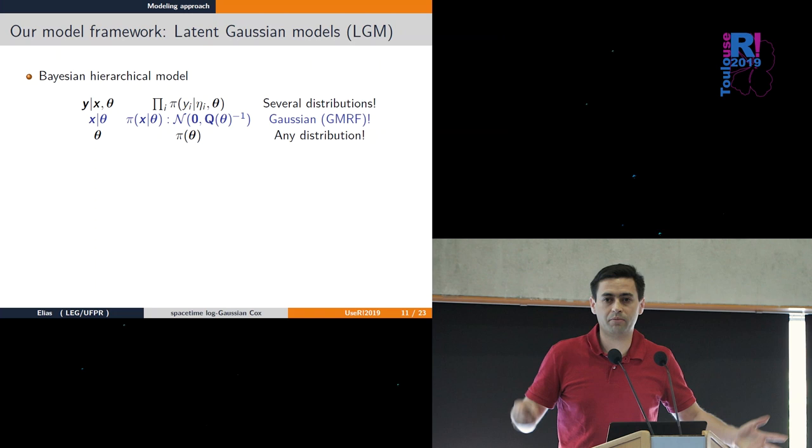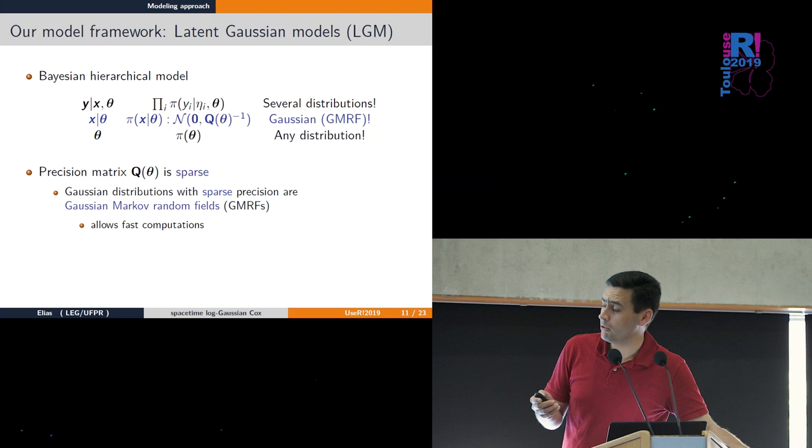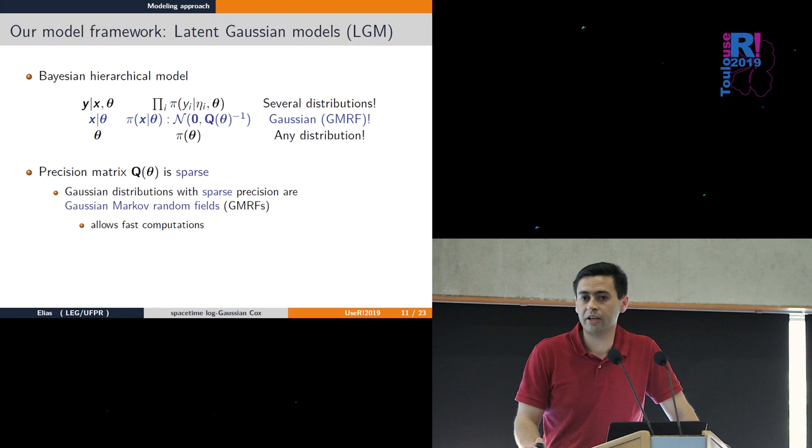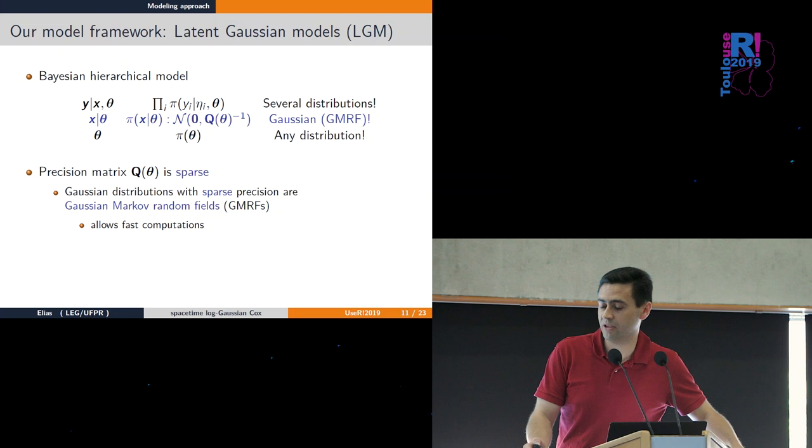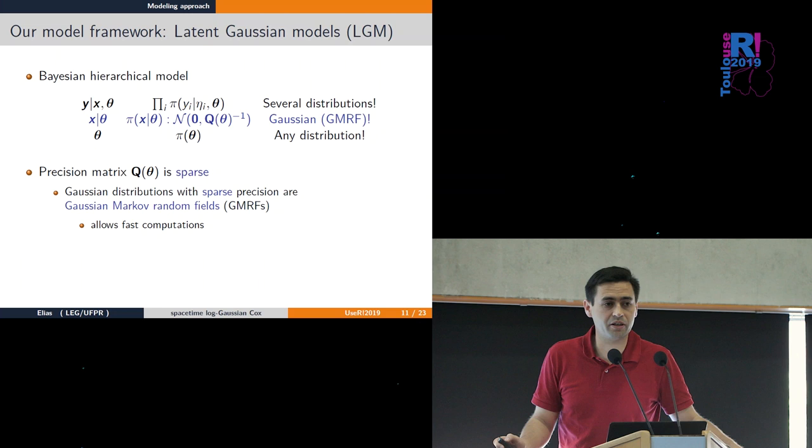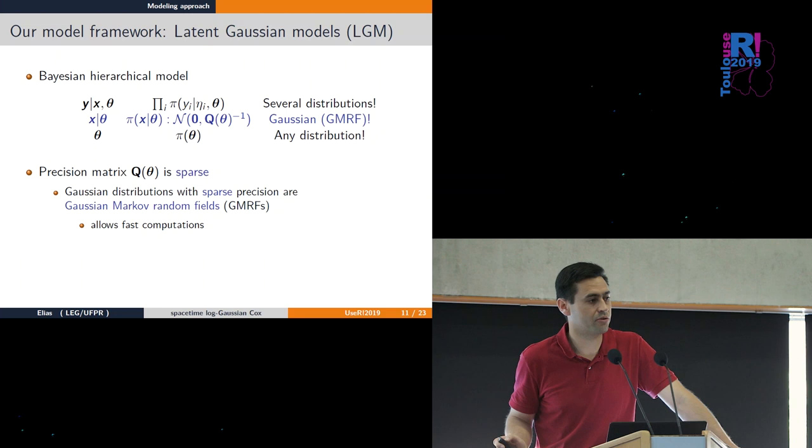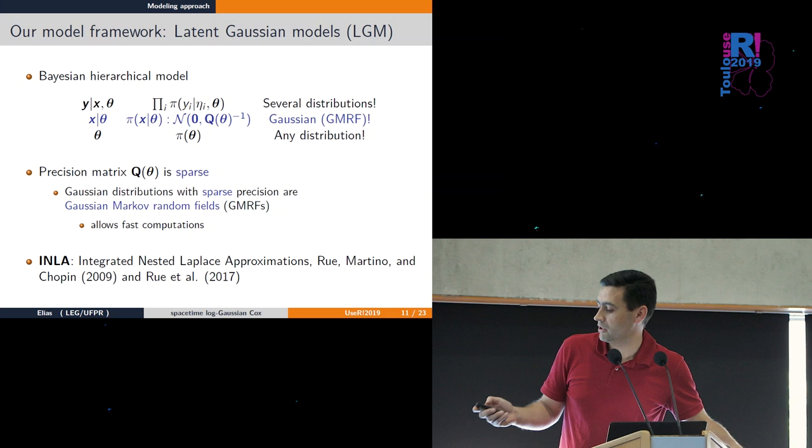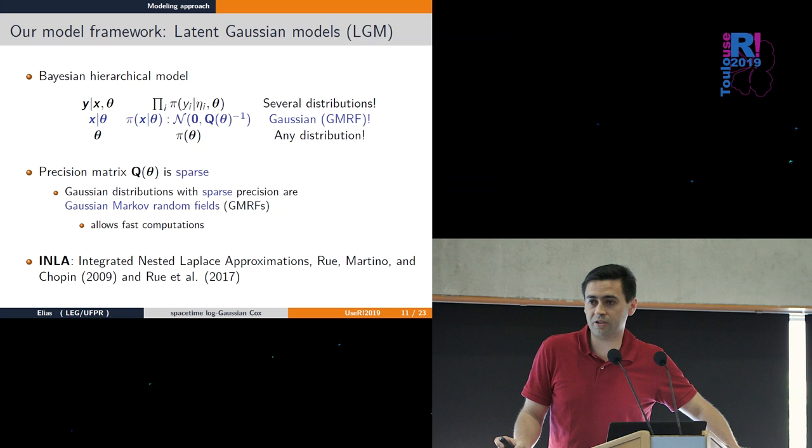A key point is that some Gaussian processes have the Markovian property. If this is the case - and several processes follow this - instead of using covariance, we can use the precision matrix because it's sparse for Markovian processes. Then we can use Integrated Nested Laplace Approximations which deals with clever algorithms for fast computations analytically without MCMC.